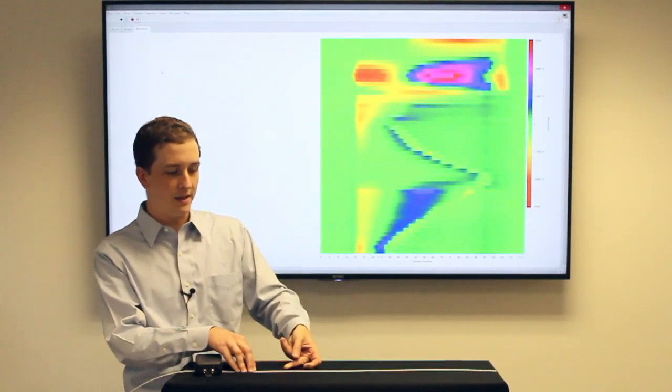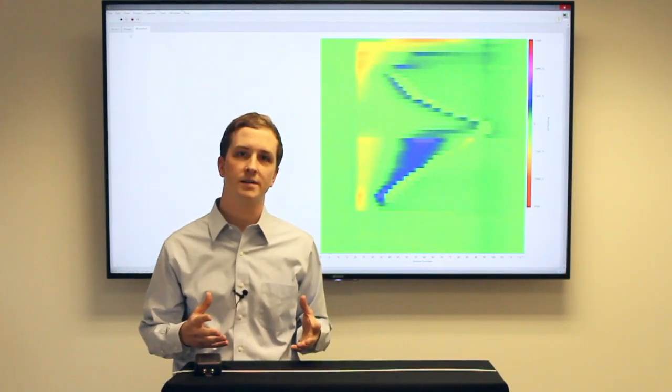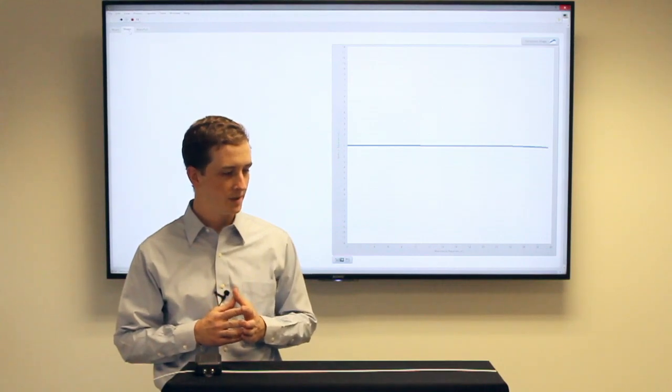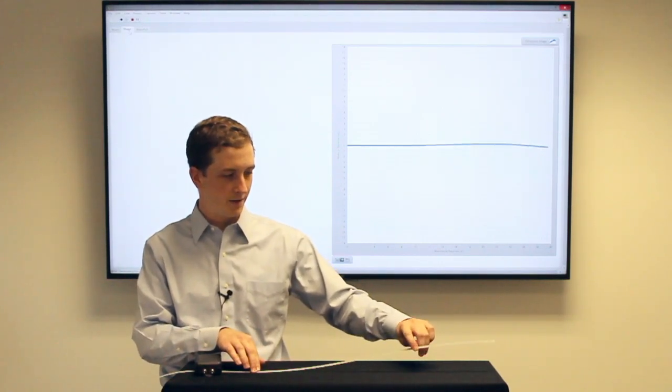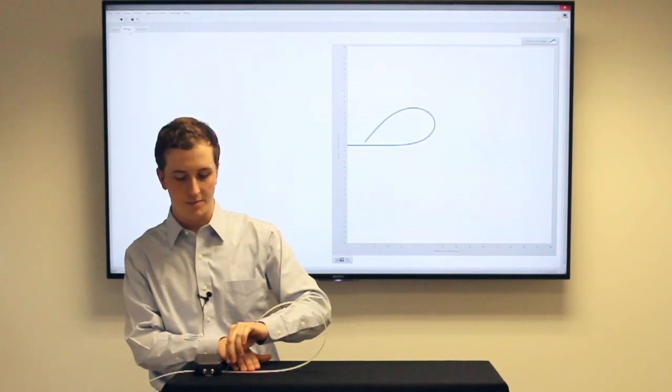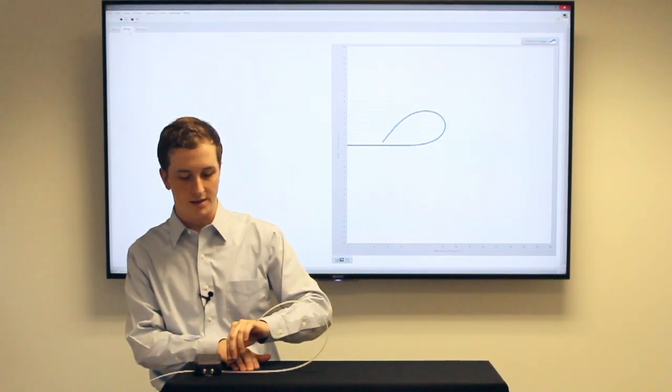So one of the things that you can do with this data is you can use it to reconstruct the deflection or the 2D shape of this beam in real time. So now as I move it around, you can now see the shape of the entire length of the beam continuously along its length.